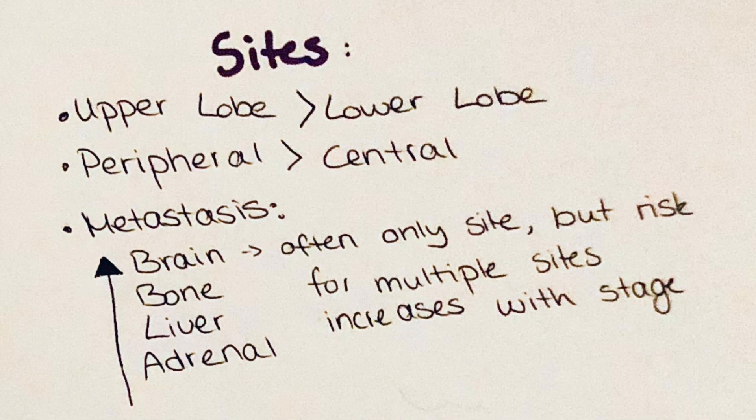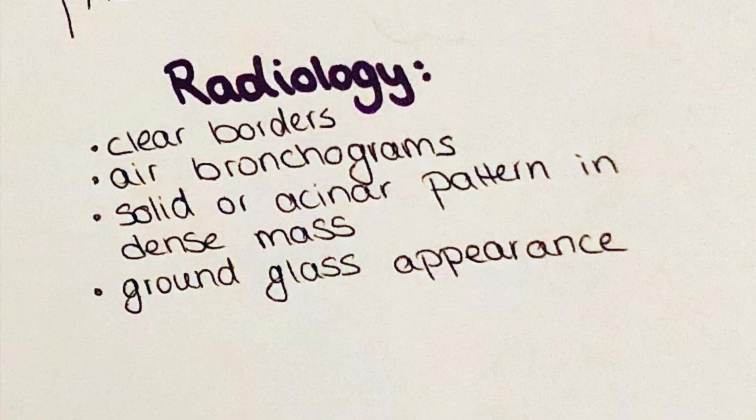Lung tumors often develop symptoms first after they have spread. The most frequently observed primary sites for metastasis of lung cancer is the brain, followed by spread to the bone, then liver, and then the adrenal gland. As the disease progresses, the likelihood of multiple metastases increases.